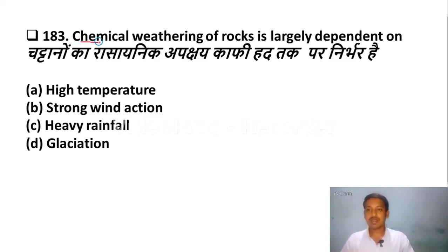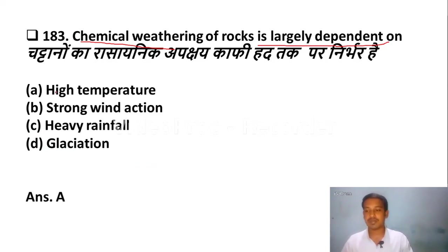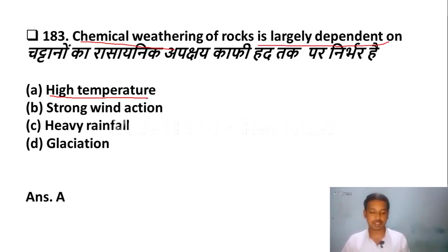Chemical weathering of rocks is largely dependent on — Option A: high temperature, Option B: strong wind action, Option C: heavy rainfall, Option D: glaciation. The correct answer is Option A, high temperature. Chemical weathering of rocks is dependent on high temperature.